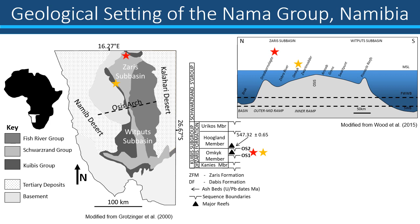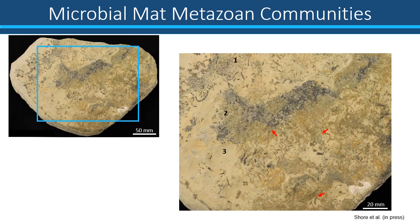The two sites are of the same age in the Omkik member, which is dated between 550 million years ago — the base of the Norma Group — and 547 million years ago, dated from an ash bed in the overlying Hoogland member. This is an example of one of the samples collected from Omkik. Zooming in, we can see areas that are densely populated, inferred to be microbial mats, with labels 1 and 2 highlighting two different generations of these mats. The intermat areas, such as areas highlighted by number 3, are sparsely populated and consist of fine-grained micrite.